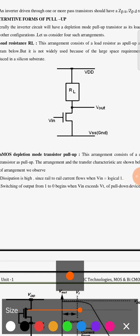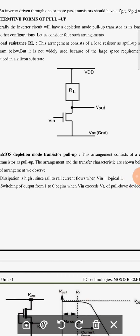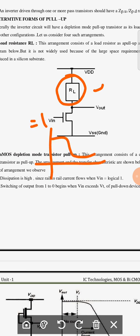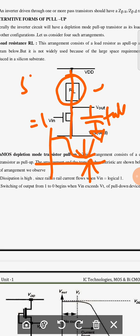Welcome back. Today we are going to discuss various forms of pull-ups. In the last class we saw that in an NMOS inverter, when a resistor is used as a pull-up device, it occupies more area even for small resistance values. The output never reaches zero because when Vin equals one, there is a static current flow from Vdd to Vss, and the load capacitor never discharges fully.